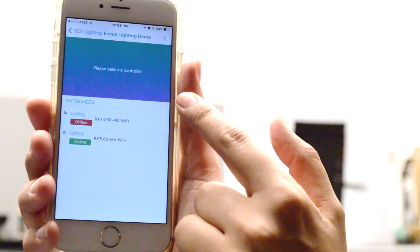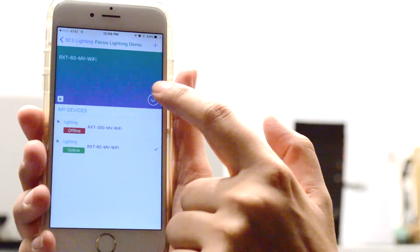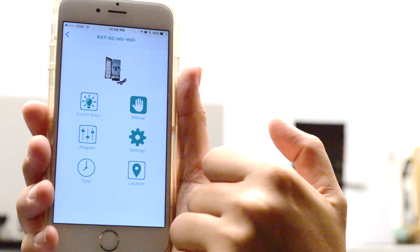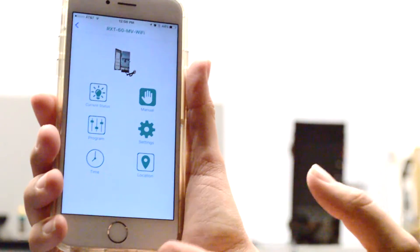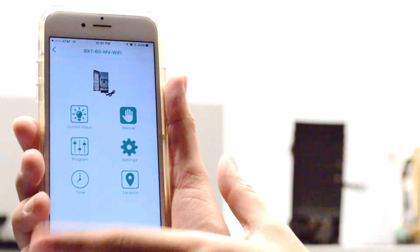For this demonstration, I'll be connecting to the RXT60, and I'm going to go ahead and check. The home page also has many features. For example, if you want to program an event for the future,